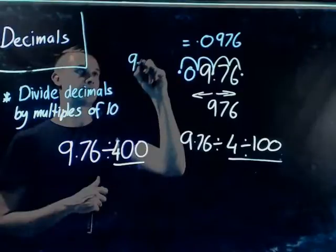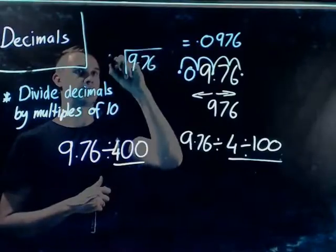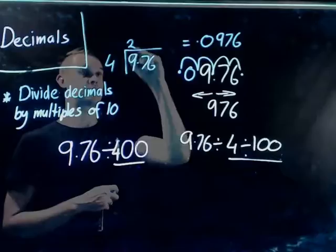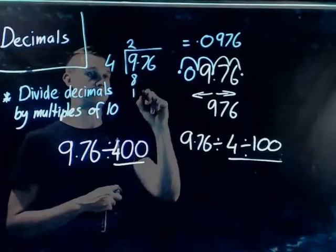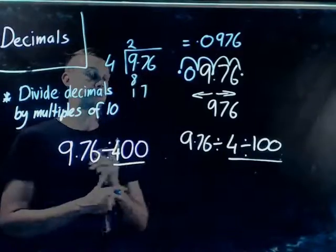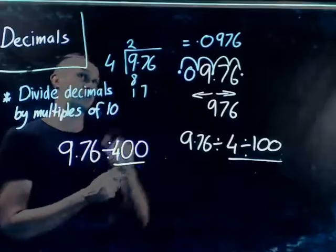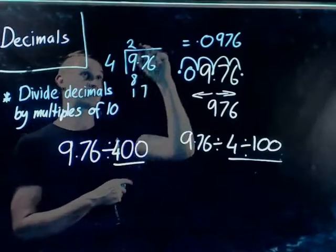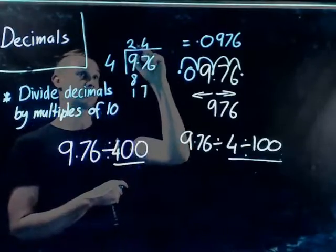So 9.76 divided by 4, 4 goes into 9 twice, which makes it 8, 1 left over, bring the 7 down. 4 goes into 7 4 times, so it's 4, 8, 12, 16. Remember, I put my decimal place up.